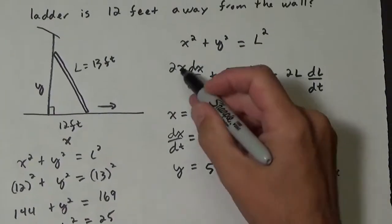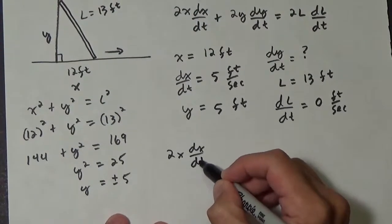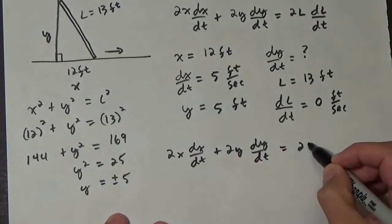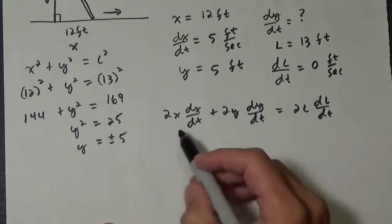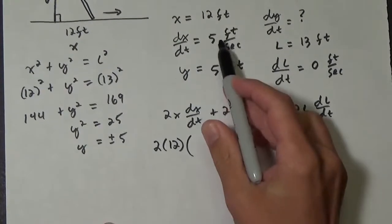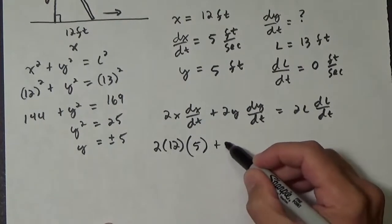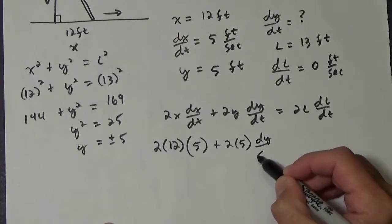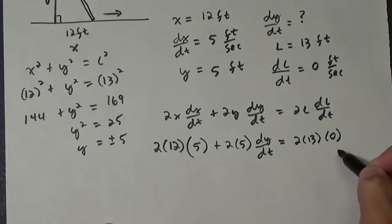Okay, so let's take our equation. It was 2x dx/dt plus 2y dy/dt equals 2L dL/dt. And let's put in all the information we have. So we have 2 times 12 times dx/dt is 5 plus 2 times 5, and dy/dt, that's what we're looking for, equals 2 times 13 times 0.